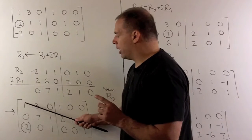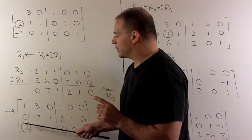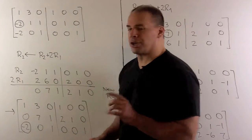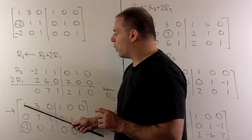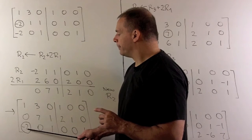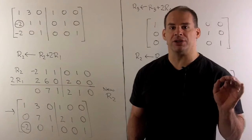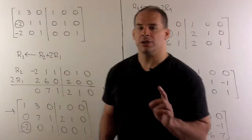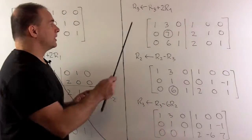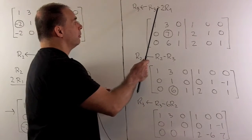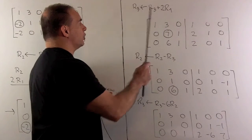Now, we have 1, 0. I'm going to turn this minus 2 into a 0. Same procedure. We're going to take twice row 1, add it to row 3, and that's going to turn this minus 2 to a 0. And then I just extend those operations to the rows. So, we're going to take row 3 plus 2 row 1, and that's going to be my new row 3.